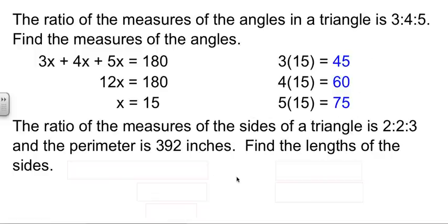We have a similar problem here, and I threw this in on the same page, mostly to make sure you're paying attention to what you're doing. The ratio of the measures of the sides of a triangle is 2 to 2 to 3. And the perimeter is 392 inches. A lot of you are going to see the word triangle, and you're going to jump right to 180. But there's a problem with that.